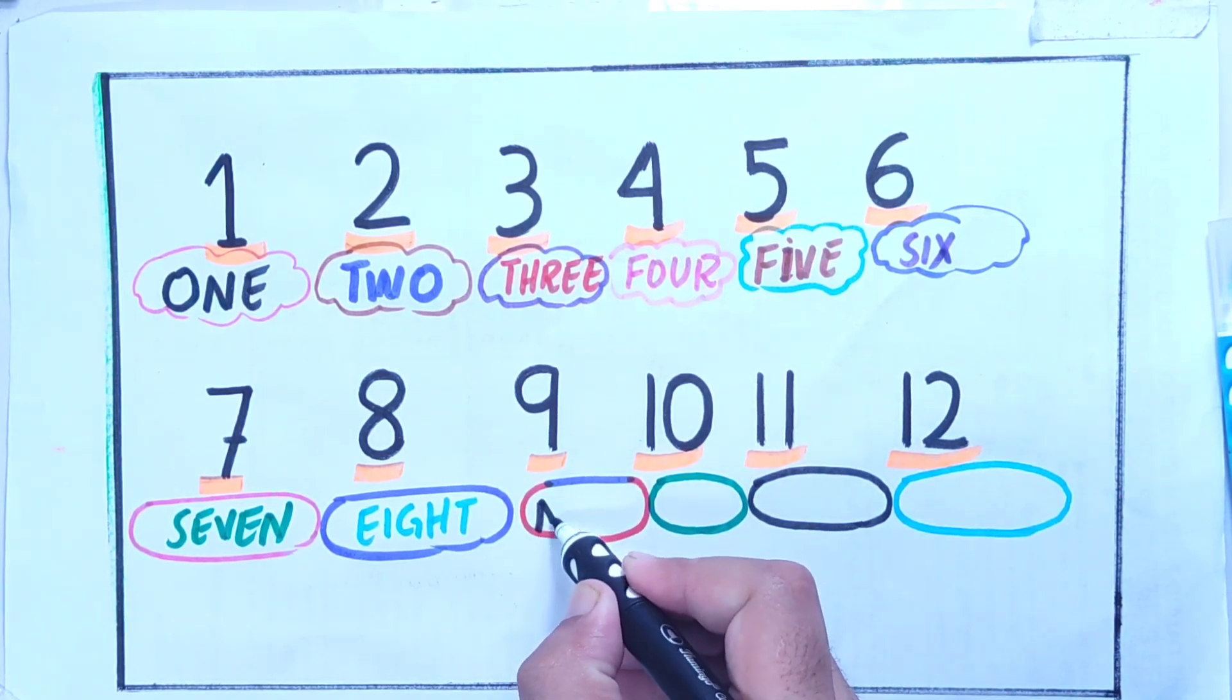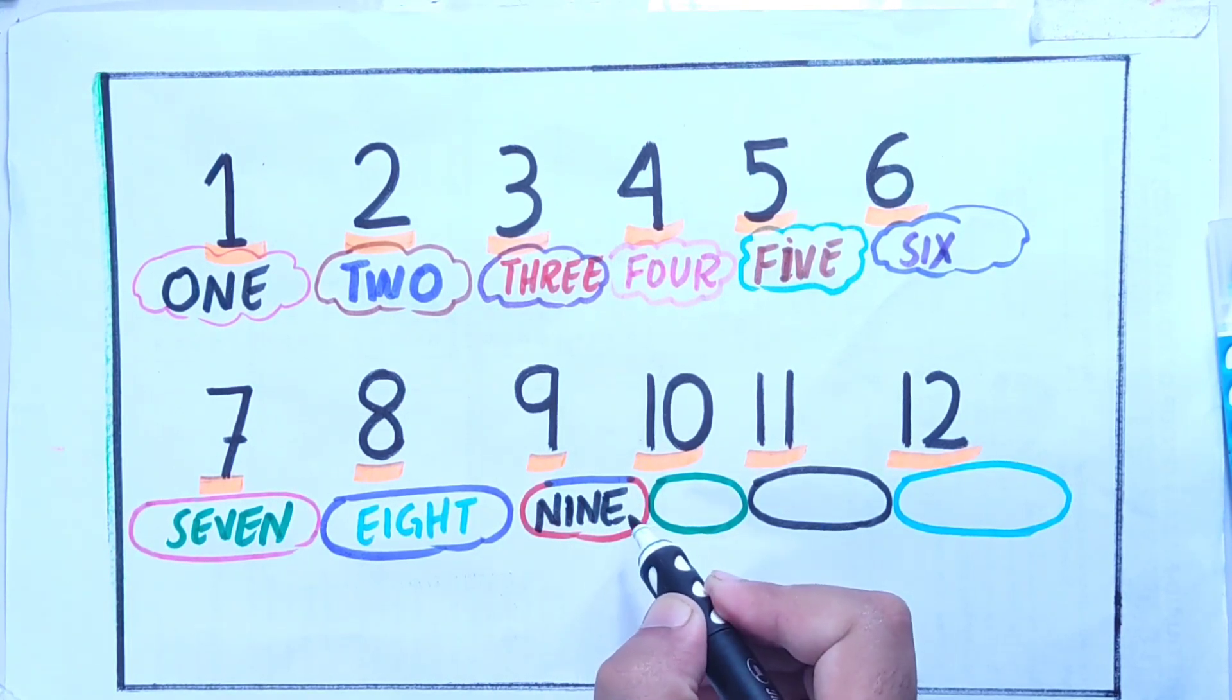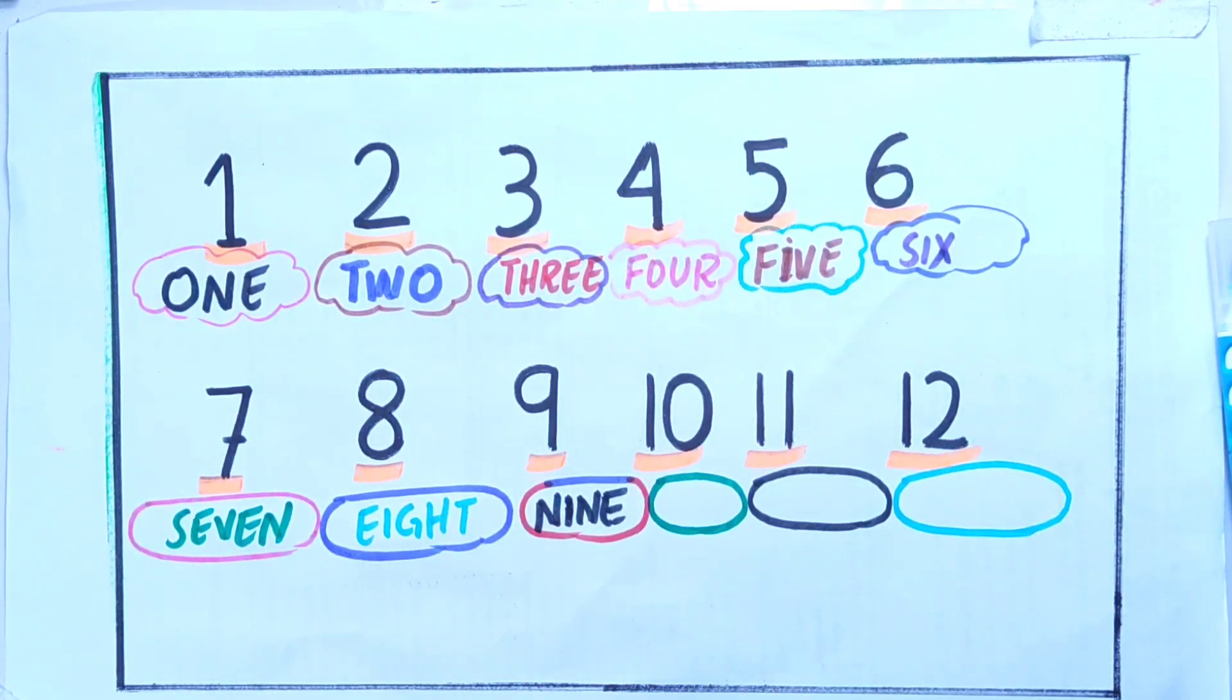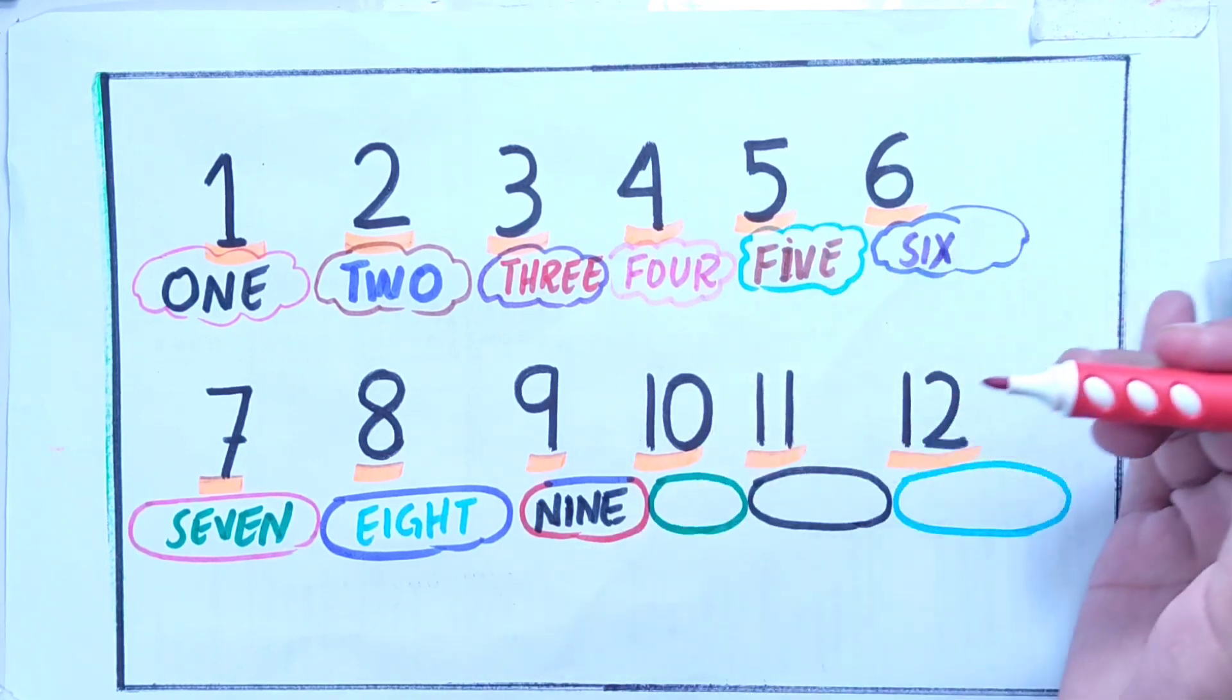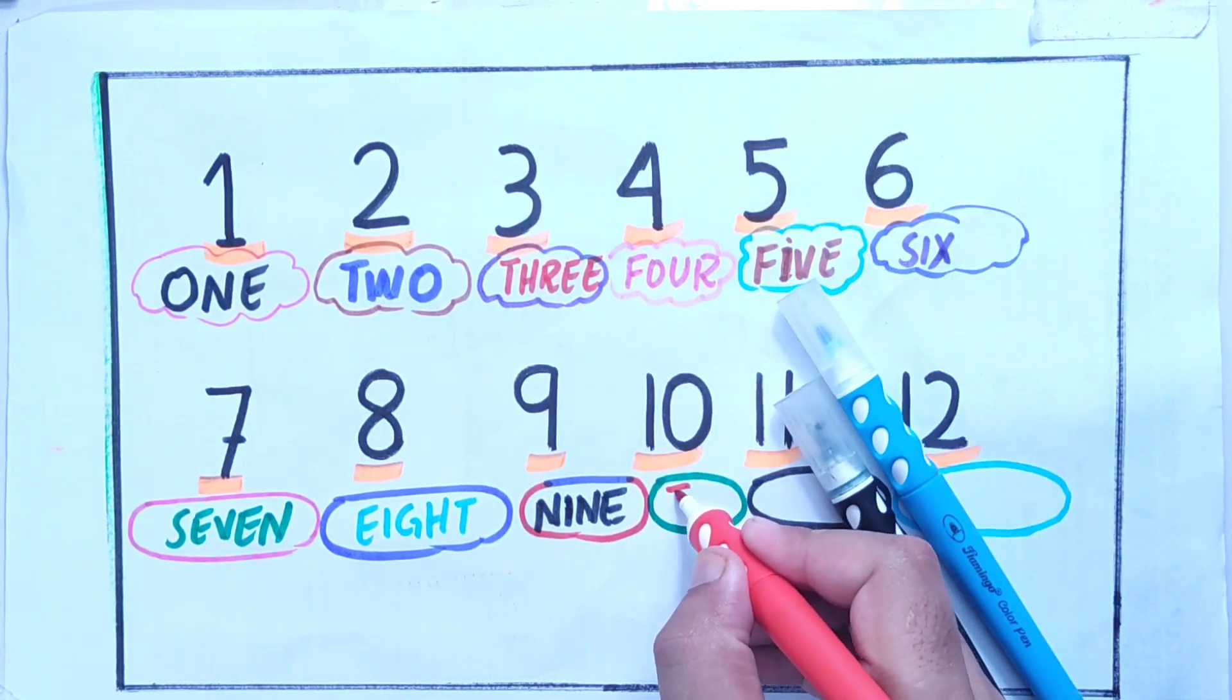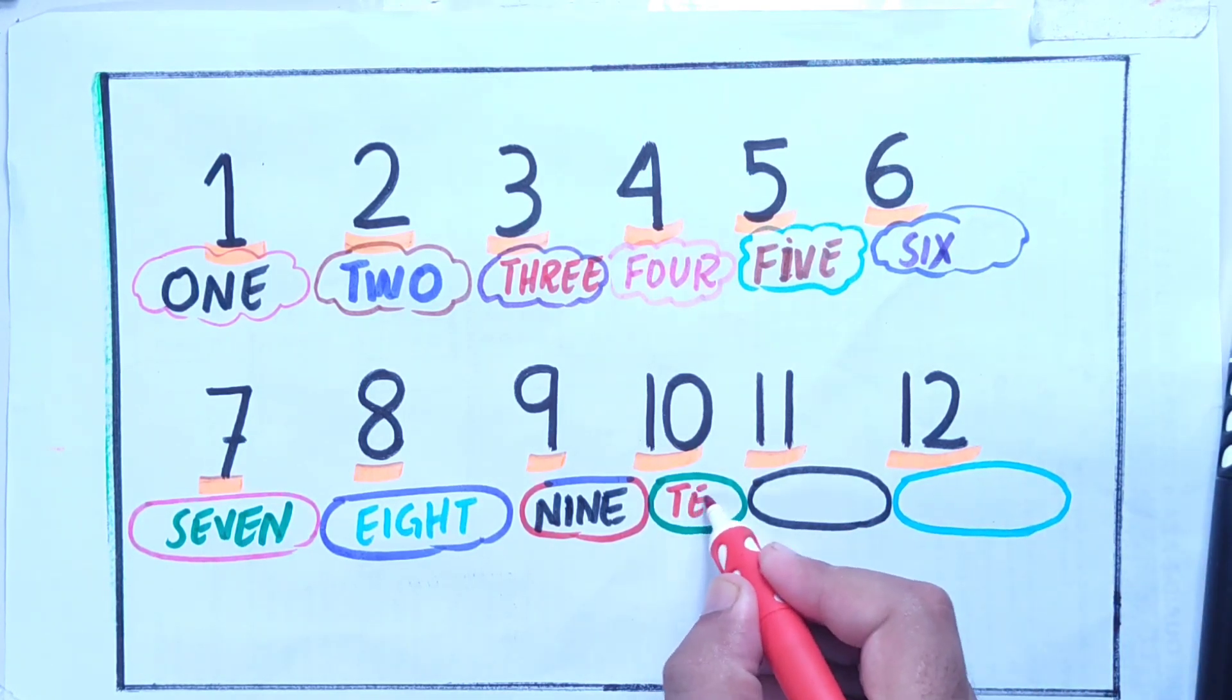Nine: N-I-N-E, nine. So nine with black color. And ten again with red color: T-E-N, ten.